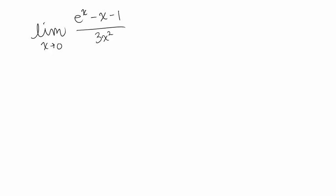First we want to check the form. The top of this fraction, e to the x minus x minus 1, goes to e to the 0 minus 0 minus 1 as x goes to 0, which is 1 minus 1, which is 0. The bottom of this fraction as x goes to 0 goes to 3 times 0 squared, which is also 0.